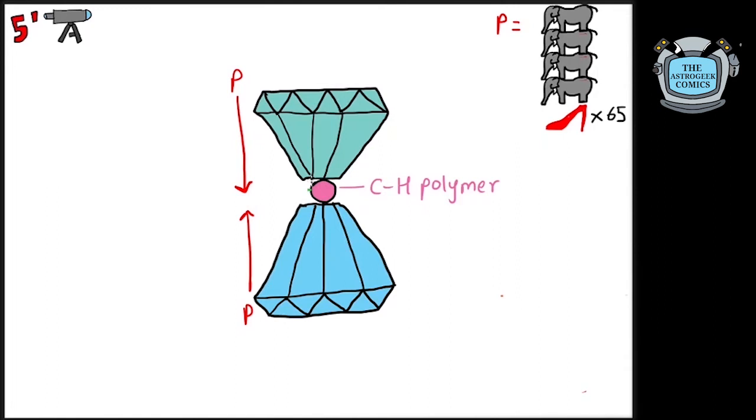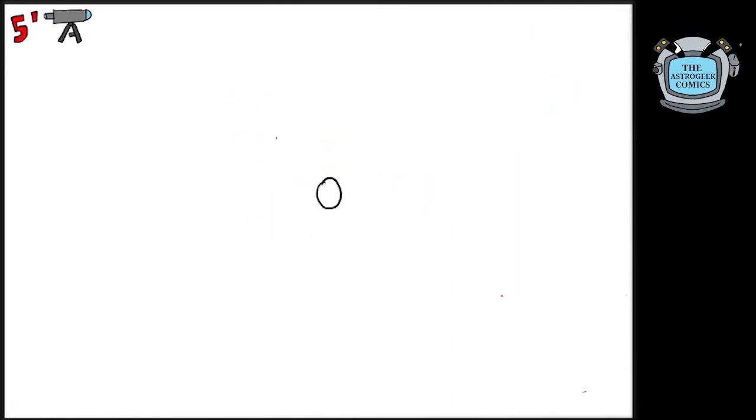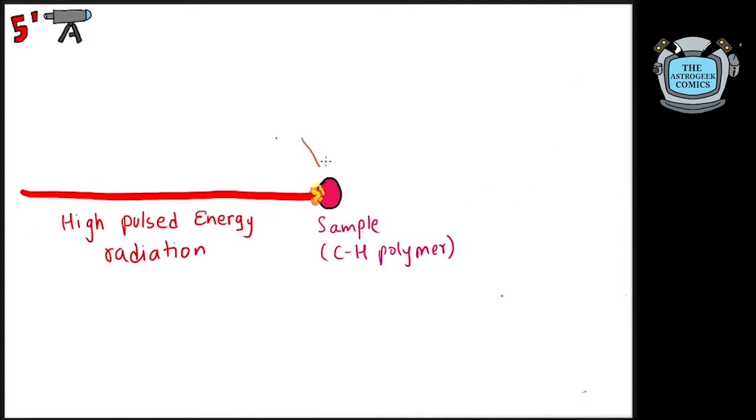Similar exotic conditions were later created by using shock compression technology which involves firing samples with high pulsed energy radiation which applies pressure and increases temperature simultaneously. These are capable of reaching gigabars of pressures and millions of kelvins of temperature.